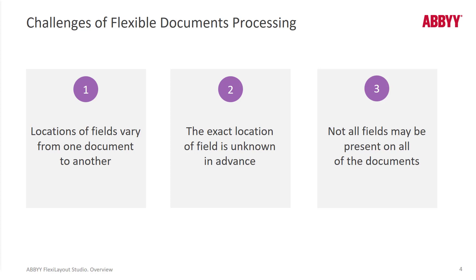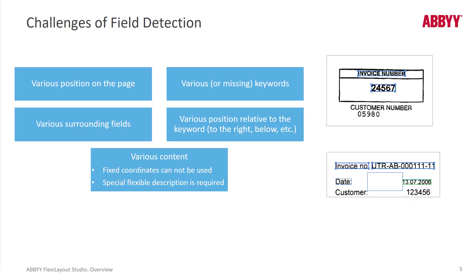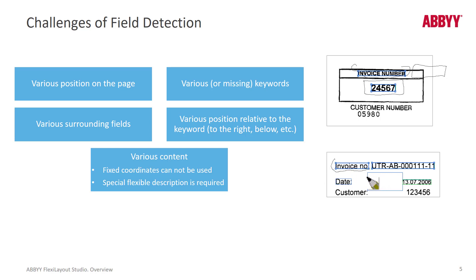We may not know the exact location of fields in advance and there may be some missing fields. This is graphically a really good example of challenges you may encounter in FlexiLayout Studio. For instance, we see a keyword here called 'Invoice Number' and here called 'Invoice No.' — those are different words, but FlexiCapture can store many variations of keywords. We can then look relative to those keywords, maybe to the right and also below. That kind of capability is very powerful and it's something that's missing from fixed form processing.